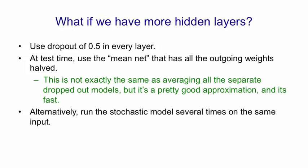We could run lots of stochastic models with dropout, and then average across those stochastic models. And that would have one advantage over the mean net: it would give us an idea of the uncertainty in the answer.